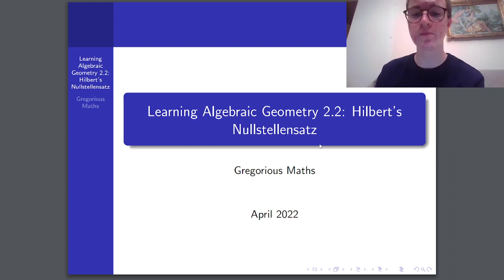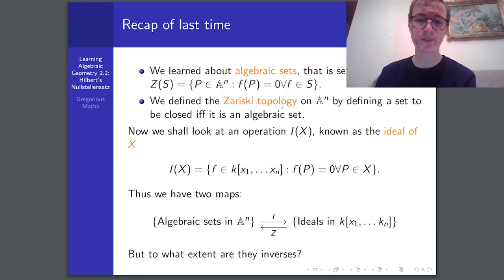which is a statement about to what extent this operation here, the one that we looked at last time, algebraic sets, and the ideal of x, which is where the points at which, sorry, the functions where the points vanish.